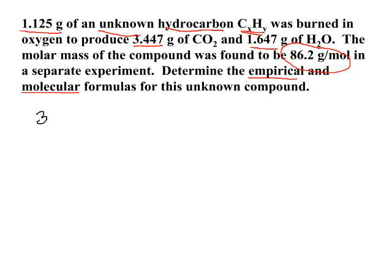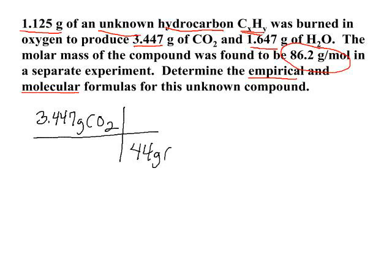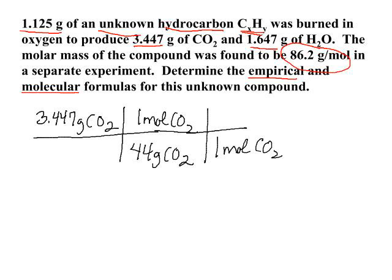We're going to take our 3.447 grams of carbon dioxide. Remember, we're going to figure out how many grams of carbon came from our original hydrocarbon and formed this carbon dioxide. 44 grams of carbon dioxide contains one mole of carbon. This time we're not going to have to go through grams of carbon because we're not subtracting to get a third element, so we're going to go straight to moles. When we calculate through for our moles of carbon, we end up with 0.07832 moles of carbon.